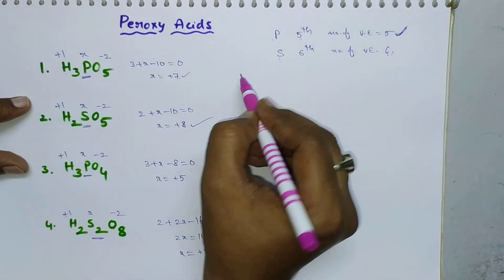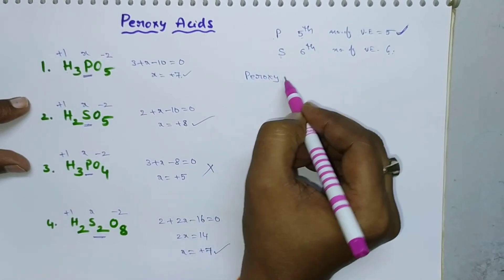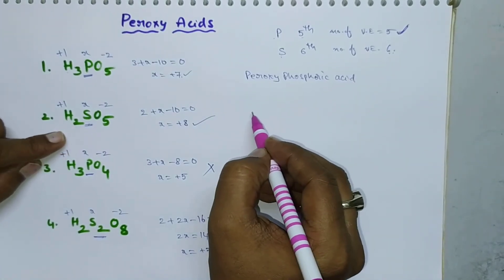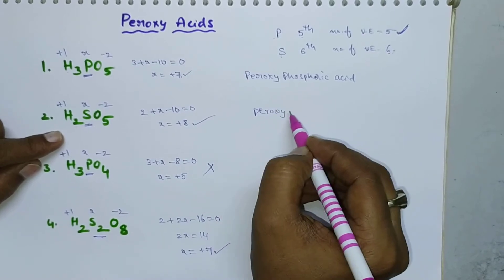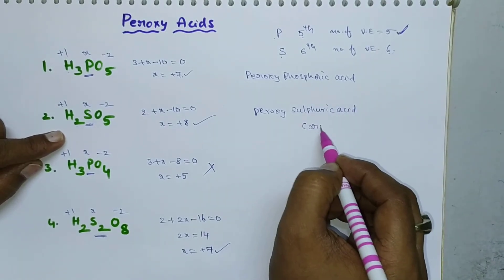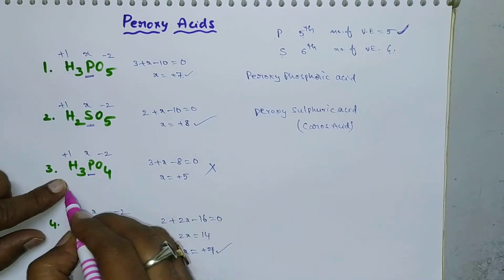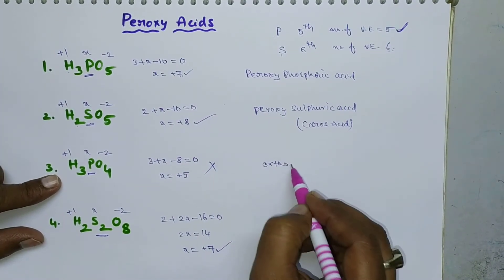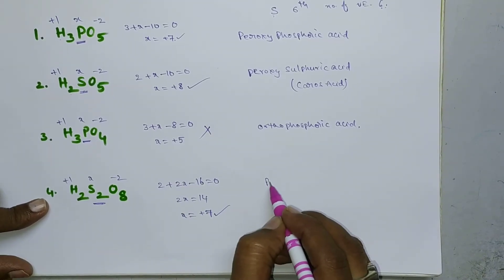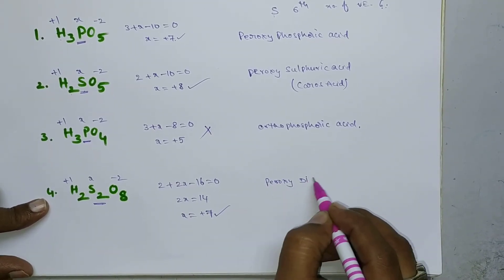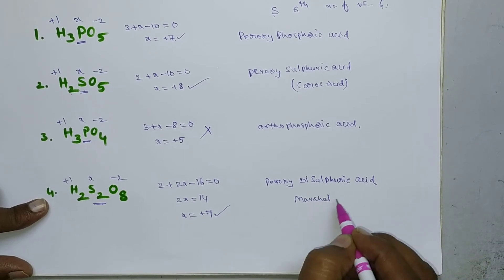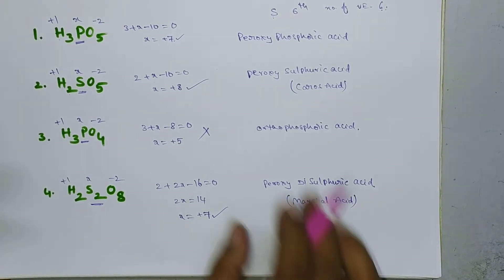So H₃PO₅ is called peroxy phosphoric acid, and H₂SO₅ is called peroxy sulfuric acid. H₂SO₅ is also called Caro's acid. H₃PO₄ is ortho phosphoric acid, and H₂S₂O₈ is called peroxy disulfuric acid, which is also known as Marshall's acid. You need to remember all these names.